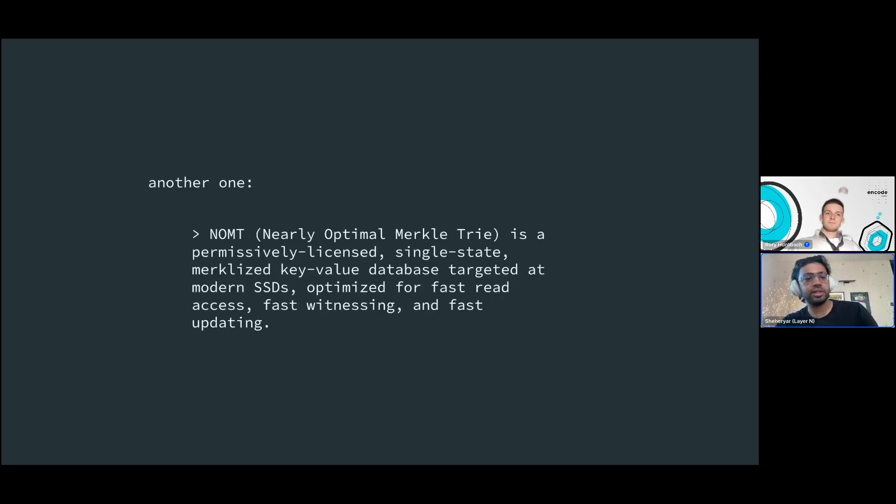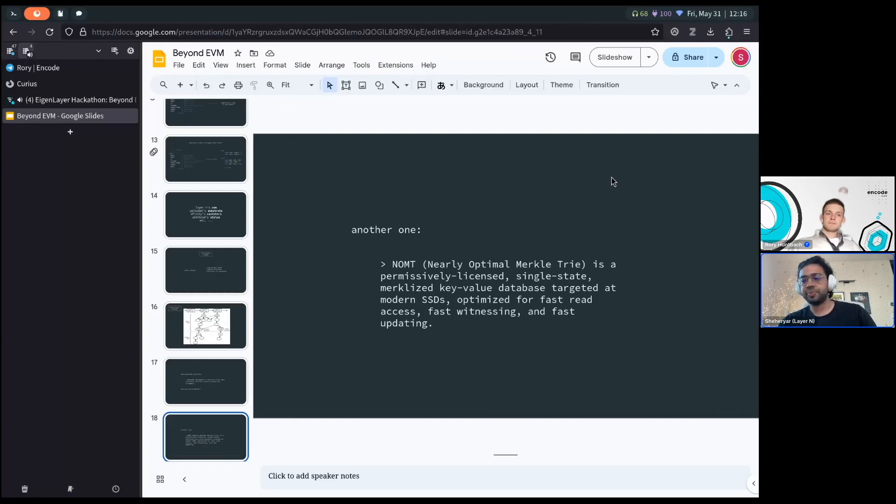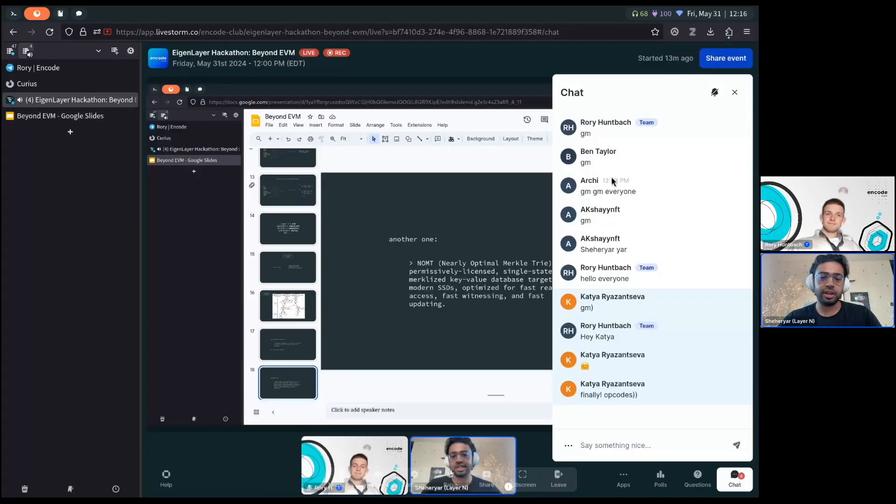And that's a very quick overview of what blockchains are currently exploring in terms of performance. I hope it gives a pretty good idea. Any questions?